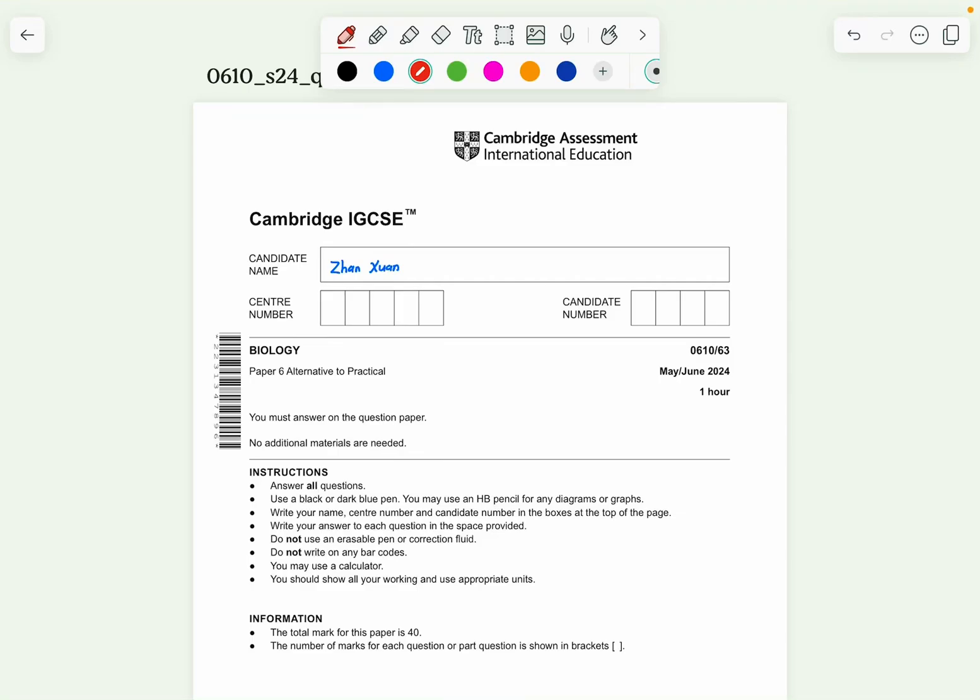Hey guys, welcome back to a new video by Biology with Zhang Xuen. So today we are going to attempt the Cambridge IGCSE Biology Paper 6 Alternative to Practical, the 0610 Paper 6 Variant 3. This is the May-June 2024 series. So if you have any questions relating to this ATP paper, feel free to comment down in the comment section below and I will reply as usual like my previous past year paper videos. So let's start off with this video today.